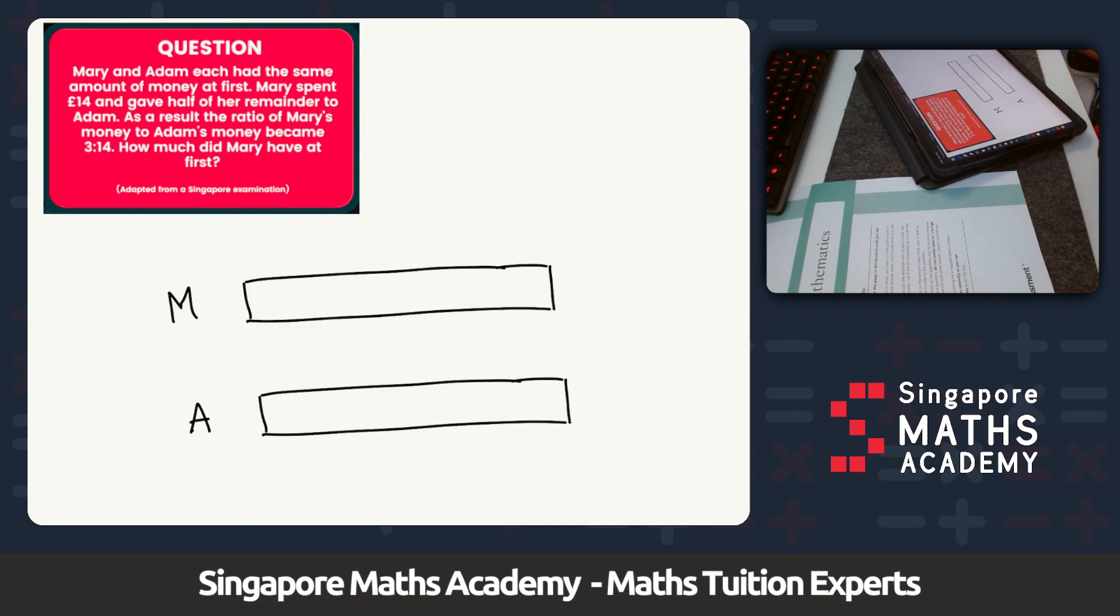It says that Mary spent £14, so maybe this is about £14. She spent £14 and then gave half the remainder. Now we've got to remember that this part represents the remainder of her money after she spent £14.